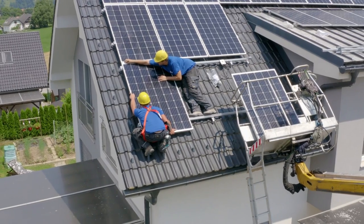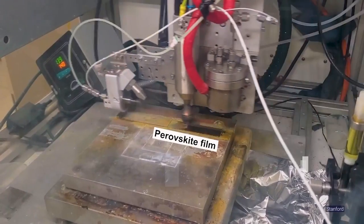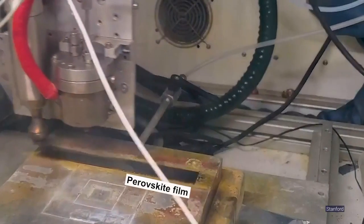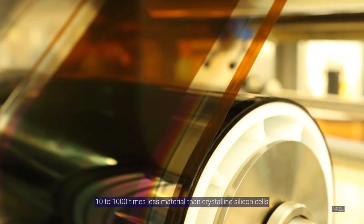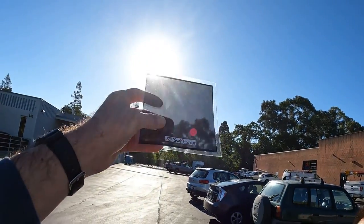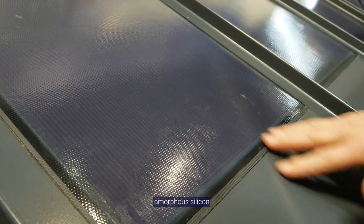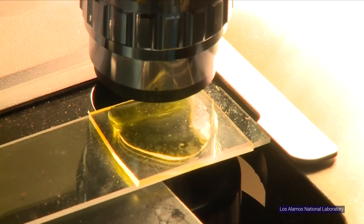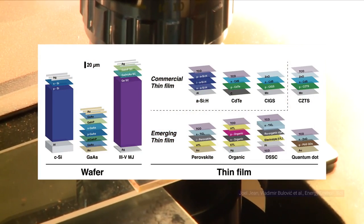Thin film cells are made by depositing thin layers of semi-conducting films onto a glass, plastic, or metal substrate, and use 10 to 1,000 times less material than crystalline silicon cells. These thin film cells are light and flexible, but have lower average efficiencies. You can make thin film cells from amorphous silicon, or more complex materials like cadmium telluride, but scientists have been on the hunt for better thin film solar technologies that can see more widespread use.